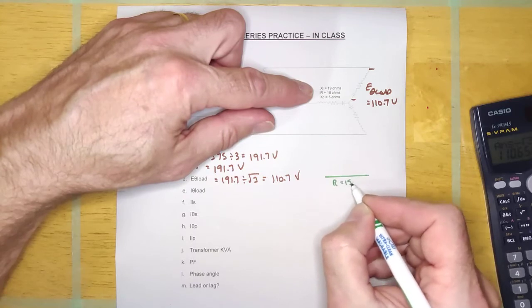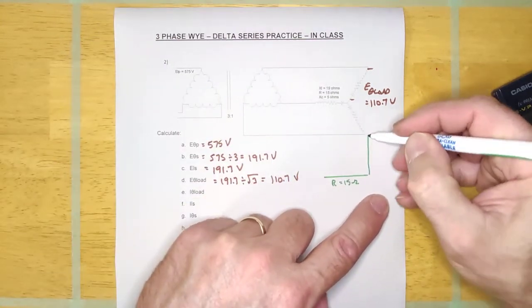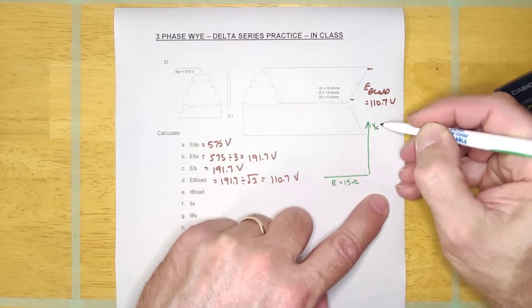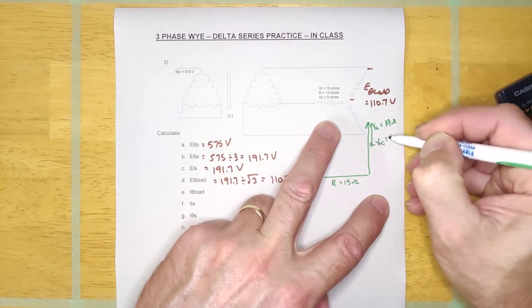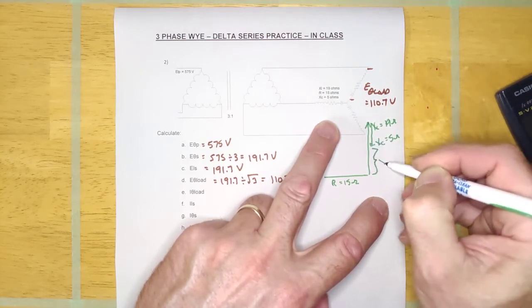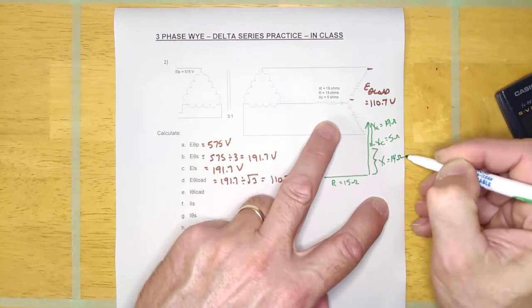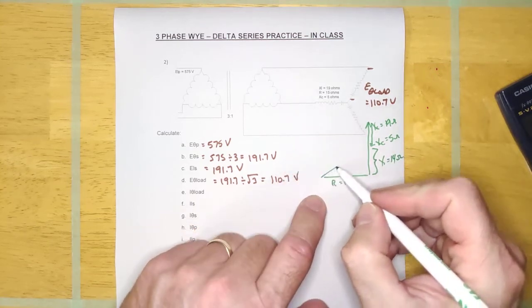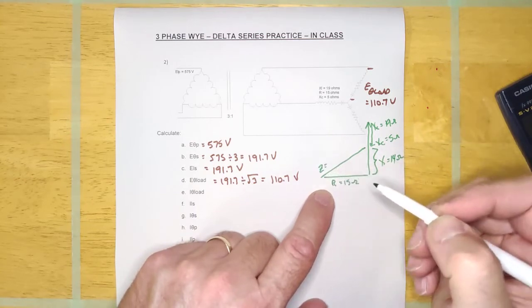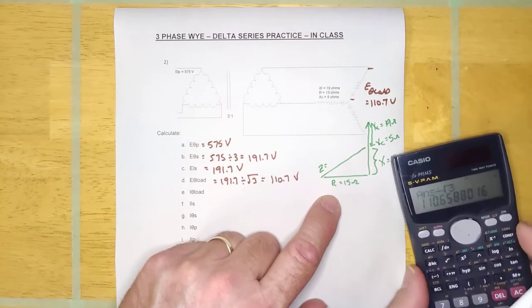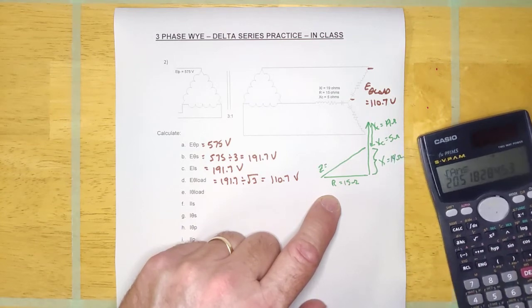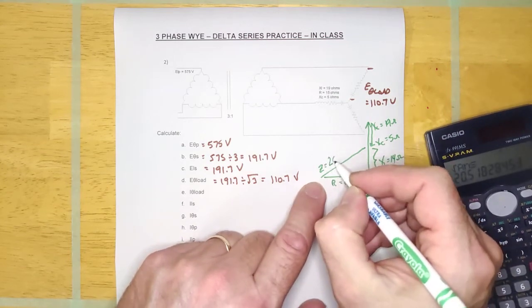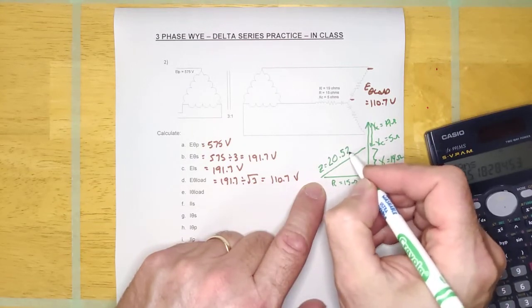Right? So R is equal to 15 Ohms. XL, 19 Ohms. XC, 5 Ohms. That means this business here is X. It's 14, I do believe. Yeah, Ohms. And here is going to be your Z, right? And it should be 15 squared plus 14 squared, square root. So I'm going to calculate that. 15 squared plus 14 squared equals root equals 20. Okay? 20.52 Ohms.